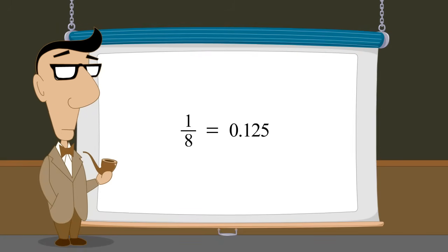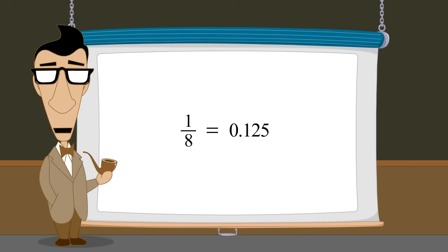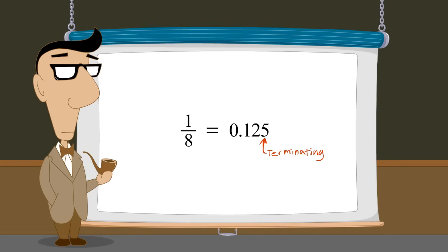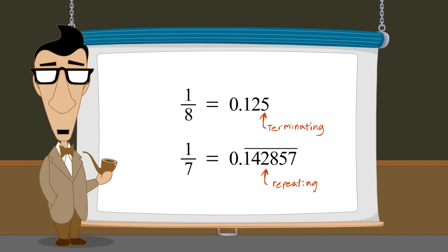We saw in the chapter on converting fractions to decimal numbers that the rational numbers can be represented as decimal numbers which either repeat or terminate. A terminating decimal number has a finite number of digits after the decimal point, while a repeating decimal number ends with an infinitely repeating series of digits.